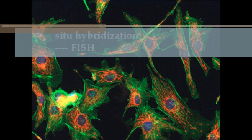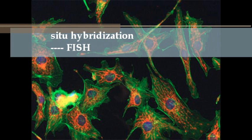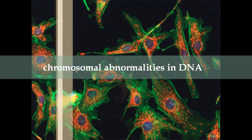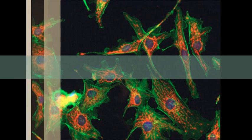Fluorescence in situ hybridization, referred to as FISH, is used to detect chromosomal abnormalities in DNA. DNA probes attached to fluorescent molecules, usually DNA-binding proteins, are attached to specific sequences of DNA.